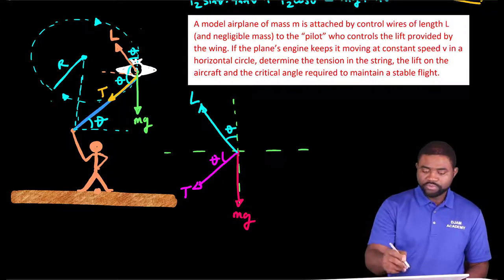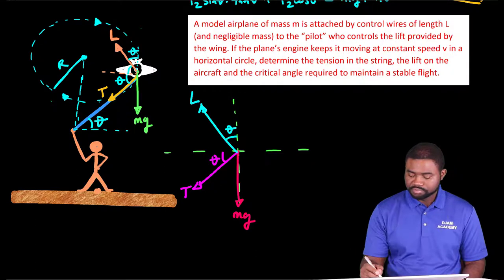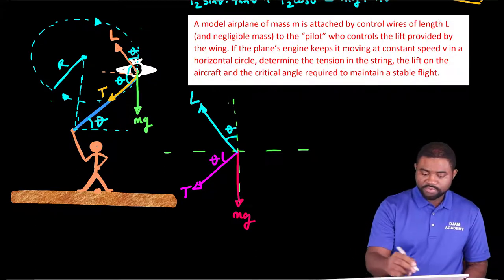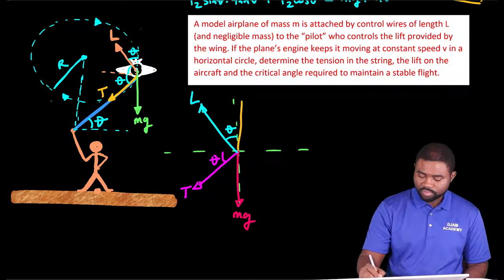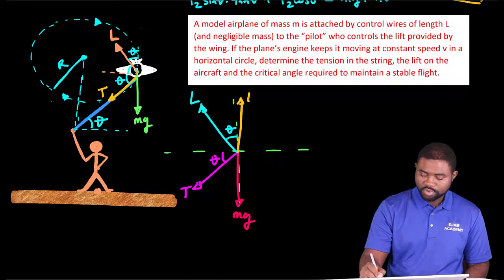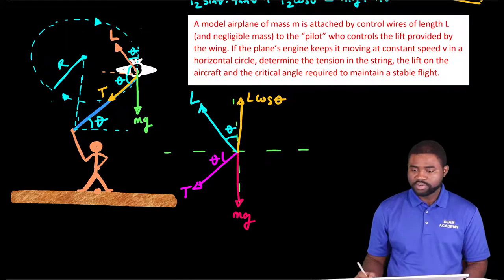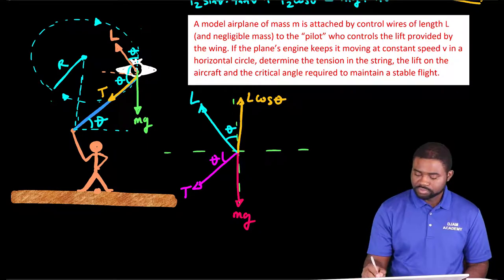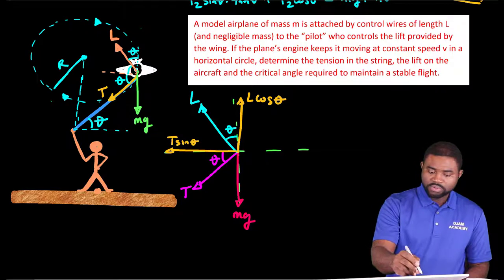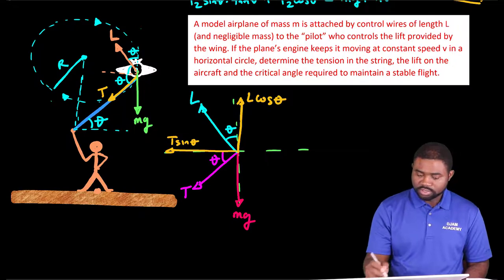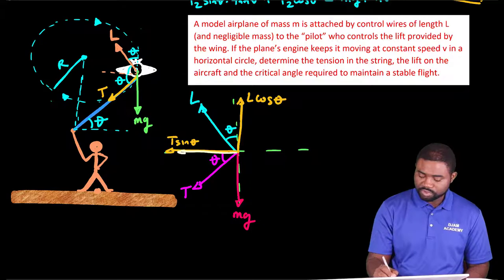So if we resolve the forces acting on this system, you will have the lift force can be resolved into two components. This is L cosine theta. The tension on the other hand can be resolved into two components.